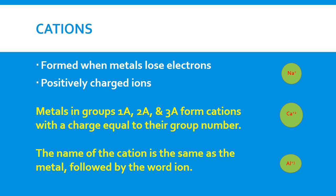Just to differentiate, we put 'ion' at the end. So it carries the same name, but we put 'ion' at the end for differentiation. So we say sodium ion, calcium ion, and aluminum ion — just to differentiate the ion from the element itself.